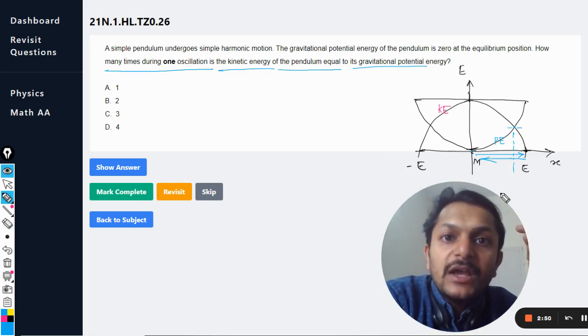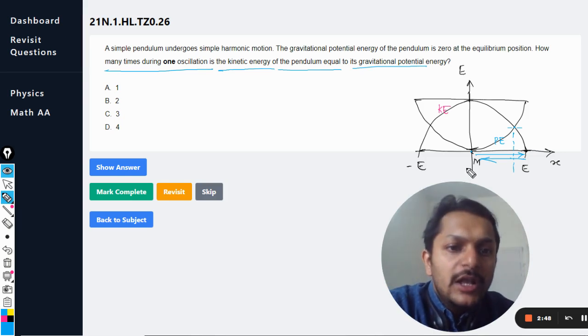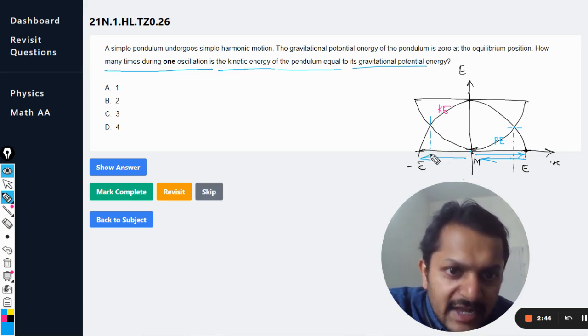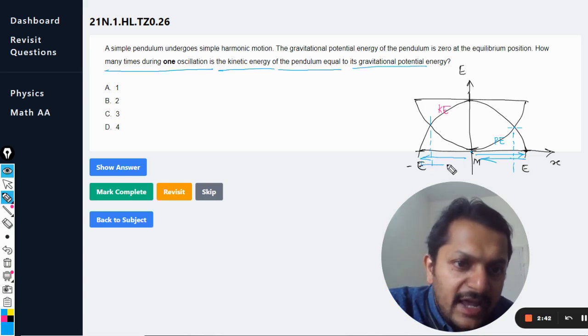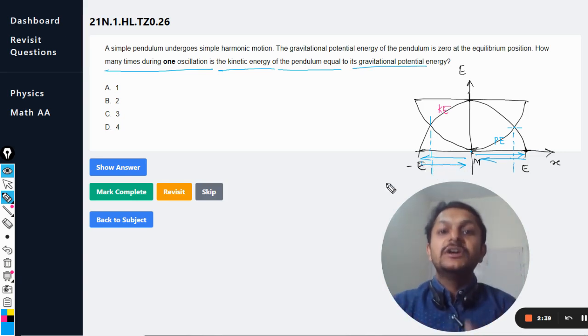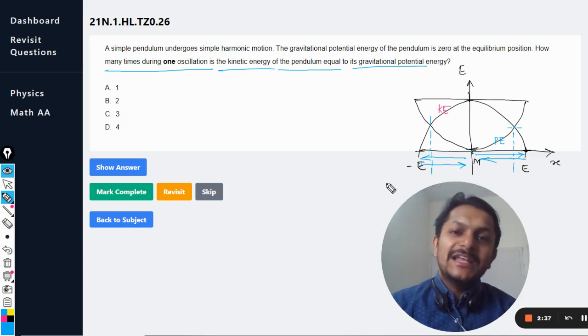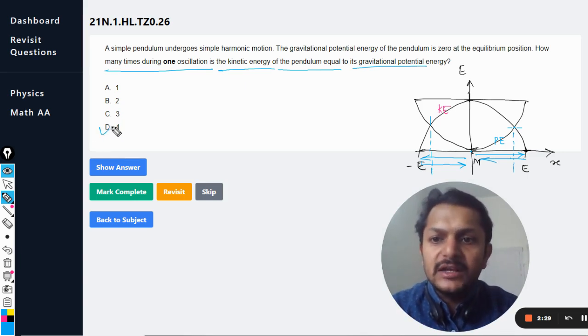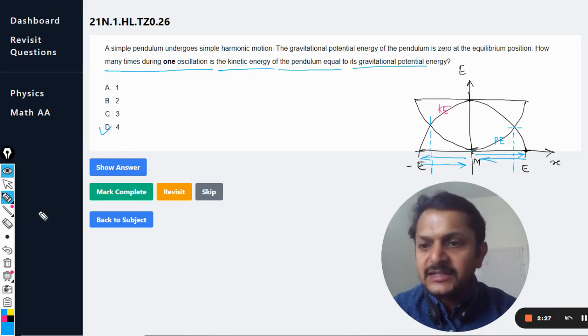Now let us move to the next half. Again we are encountering that similar kind of point, and again when we are going back to the mean position, the point is encountered a fourth time. So I can say that there will be four such instances in one oscillation when the potential energy will be equal to kinetic energy. Clearly the answer will be D.